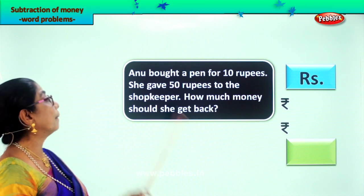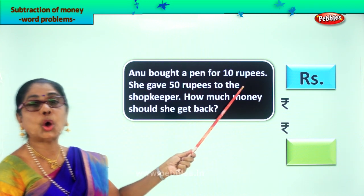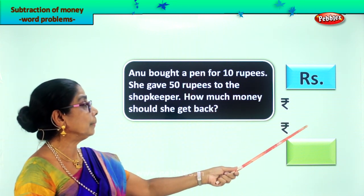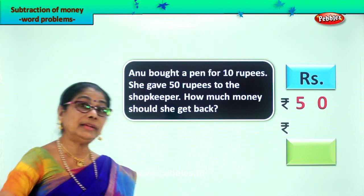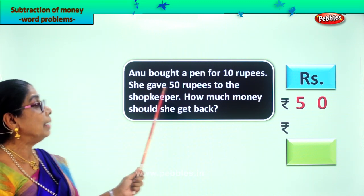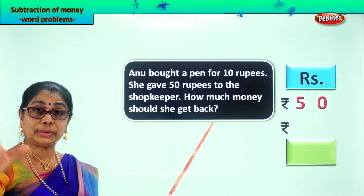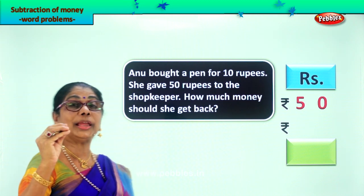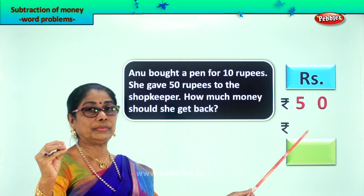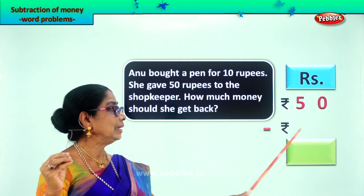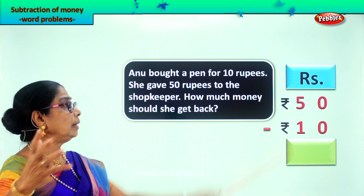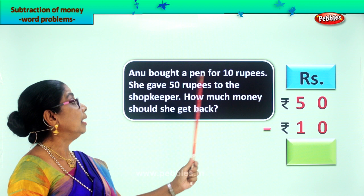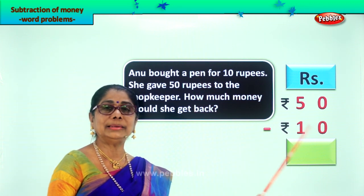Let's work out the sum. Amount she gives the shopkeeper comes first — 50 rupees. Then, amount spent on a pen: minus 10 rupees. So 50 rupees minus 10 rupees. What is the amount given to the shopkeeper? 50 rupees. What is the amount spent on a pen? 10 rupees.